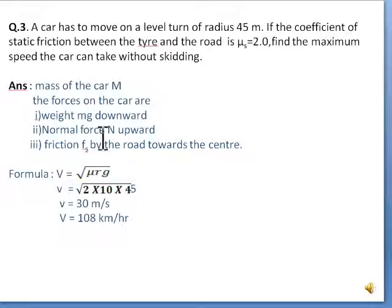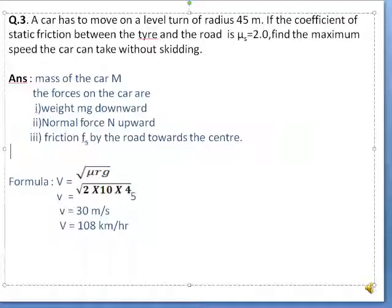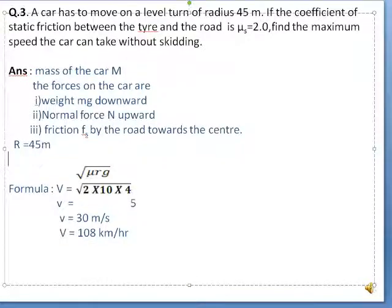Now here what is given? Given quantities: R = 45 meter, coefficient of static friction μs = 2. What we have to find is velocity, maximum velocity.